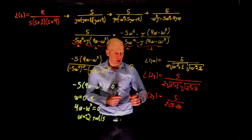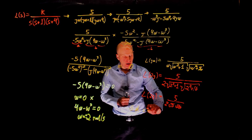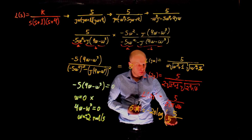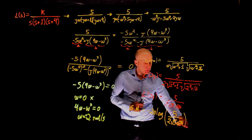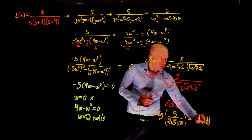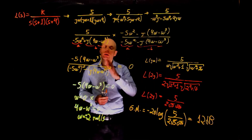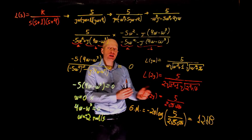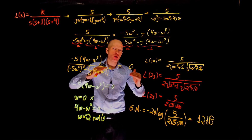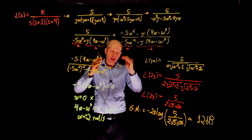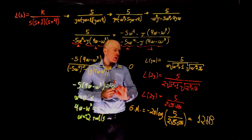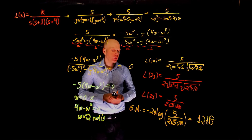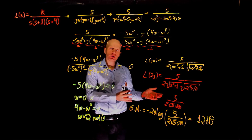Now that we have the magnitude, we can calculate the gain margin. The gain margin is negative 20 log of (5 over 2 times square root of 5 times square root of 20), and this is approximately 12 decibels. So when k equals 5, the gain margin is 12 decibels. This means we can add 12 dB to the system and the Bode plot would go upward 12 dB; at that particular frequency the gain would be 0 dB, and past that point the system becomes closed-loop unstable. So the gain margin is positive 12 decibels.